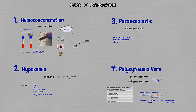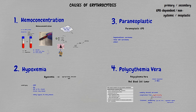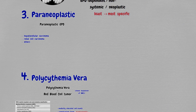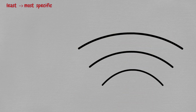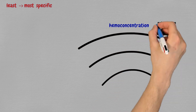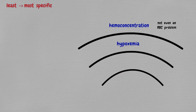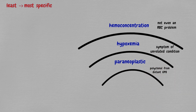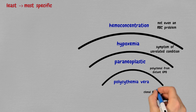Different sources organize the causes of erythrocytosis in many ways — primary versus secondary (primary being polycythemia vera), EPO-dependent versus not EPO-dependent, systemic versus neoplastic. But the most intuitive way to remember them is from least to most specific, thinking in a stepwise manner, digging deeper physiologically at each step. First, hemoconcentration — not even a problem with the cell line itself. Then secondary to hypoxemia — basically a symptom of an unrelated condition. Then the two tumor-associated conditions: first a polyclonal expansion secondary to a distant tumor secreting EPO, and then the primary tumor itself, a clonal expansion of cells.